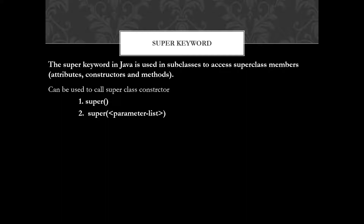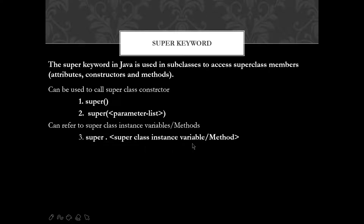We can use super in three ways. The first two ways involve using the constructor. Constructors are of two types: parameterless constructors and parameterized constructors. If you want to use a super keyword with a parameterless constructor, we use one form; if you want to access the super class parameterized constructor, we use another form. We will learn these two in detail in this lecture.